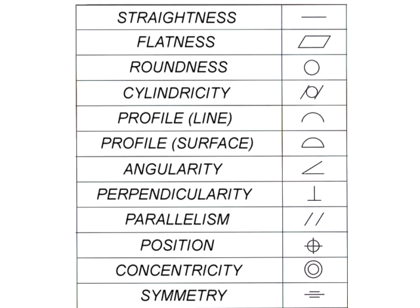The next three are related geometric tolerances — they must relate to another surface to exist: angularity, perpendicularity, and parallelism. Something angular must be angular in relation to something else. A surface cannot be parallel to nothing — it must be parallel to something else, which generally already has a geometric tolerance applied to it, like flatness or straightness.